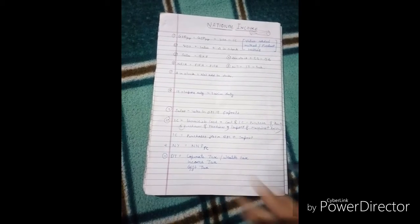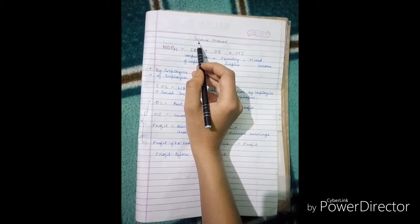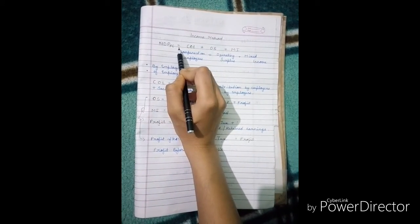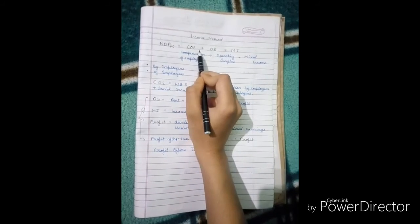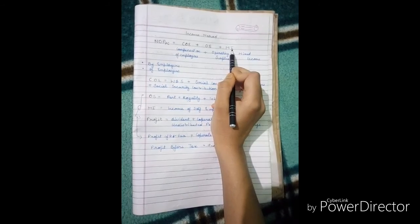Important method after value-added is income method. In income method we calculate NDPFC or NI, which includes compensation of employees plus operating surplus plus MI, which is mixed income.